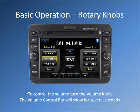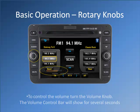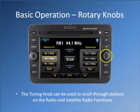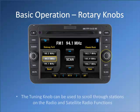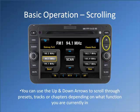To control the volume, turn the volume knob. The volume control bar will show for several seconds. The tuning knob can be used to scroll through stations on the radio and satellite radio functions. You can use the up and down arrows to scroll through presets, tracks, or chapters depending on what function you are currently in.